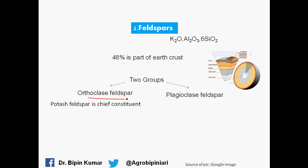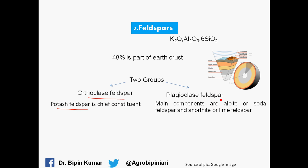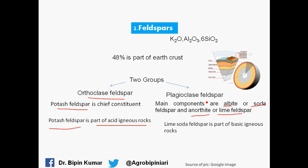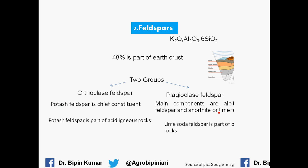Orthoclase feldspar is also called potassium feldspar, as potassium is its chief constituent. In the case of plagioclase feldspar, the main components are albite (soda feldspar) and anorthite (lime feldspar). Potash feldspar is mainly part of acid igneous rocks, while plagioclase feldspar is part of basic igneous rocks. Plagioclase is also called lime-soda feldspar.